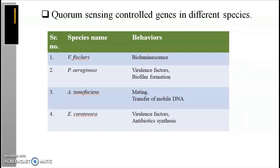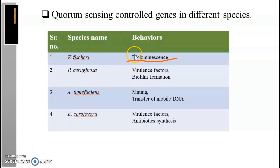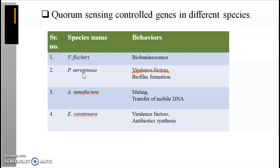Now I want to tell you about behaviors controlled by quorum sensing in different bacterial species. First is Vibrio fischeri, which has the bioluminescence property. Second is Pseudomonas aeruginosa, which has hundreds of genes controlled by quorum sensing — all very important for virulence. Pseudomonas gets into the lungs and forms a biofilm, which is how bacteria stick inward and outward. It secretes terrible virulence factors such as protease and hydrolase, which damage the person's lung tissue.